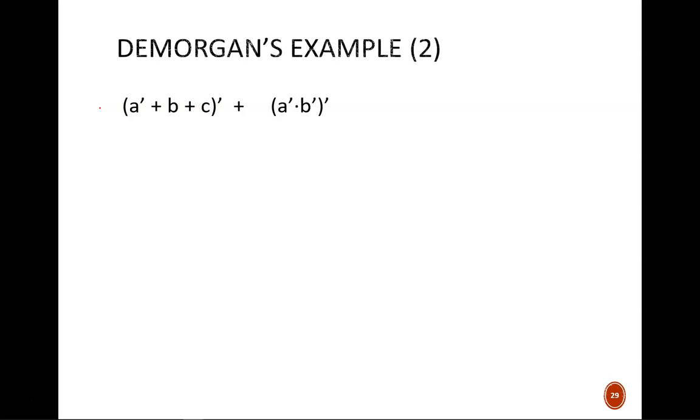We will apply DeMorgan's Theorems two separate times, once on each side of this plus sign. On the left, we bring down the prime to each literal inside the parentheses, and we switch out all the ORs for ANDs.